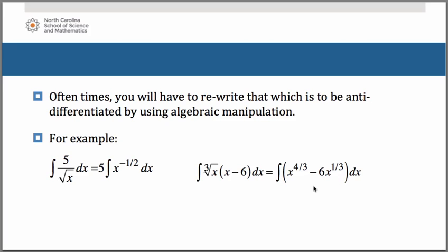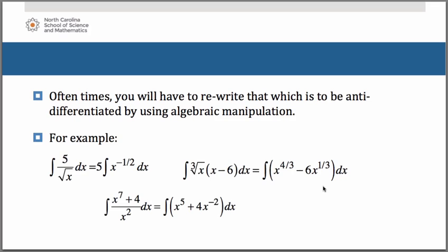Finally, one last example. For the anti-derivative of x to the 7th plus 4 over x squared dx, we apply the laws of exponents and rewrite this as x to the 5th plus 4x to the negative 2nd — very similar to how you would have worked with it if you wanted to take a derivative.